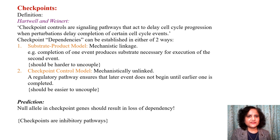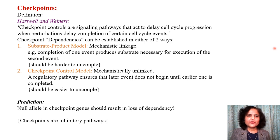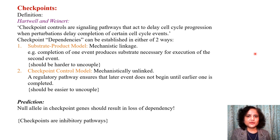Hartwell and Weinert defined checkpoint controls as signaling pathways that act to delay cell cycle progression when perturbations delay the completion of certain cell cycle events. They postulated that checkpoint dependencies can be established in two ways. One is the substrate-product model: a mechanistic linkage where completion of one event produces a substrate necessary for execution of the second event. For example, if tubulin production is stopped, the spindle cannot form — this is an example of direct coupling that is impossible to disconnect.